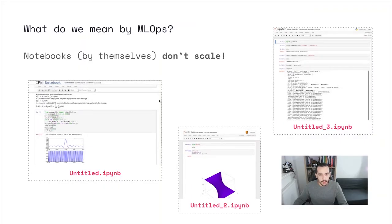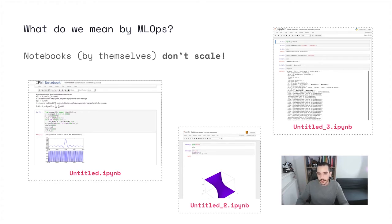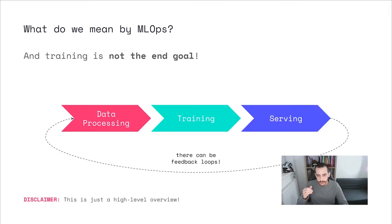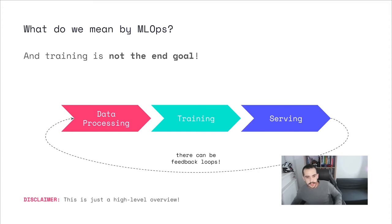First things first, what do we mean by MLOps? I find it useful to consider the alternative. Let's assume we don't have any MLOps. You get asked to build a machine learning model for a particular problem. The first thing you do is find a dataset, then spin up your Jupyter notebook and start training different versions of your model. However, you pretty soon realize this process doesn't scale, and that training by itself is usually not the end goal. After training, you want to put your model in production. And before training, you had to run a lot of scripts to preprocess your data.